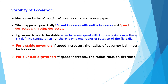For the stability of the governor: in the ideal case, the radius of rotation of the governor is constant at every speed. But in the practical case, as speed increases the radius also increases, and as speed decreases the radius decreases. The governor is said to be stable when for every speed within the working range there is a defined configuration — there is only one radius of rotation of the fly balls. For the stable governor, if speed increases the radius must increase, and for the unstable governor, if speed increases the radius of rotation decreases.